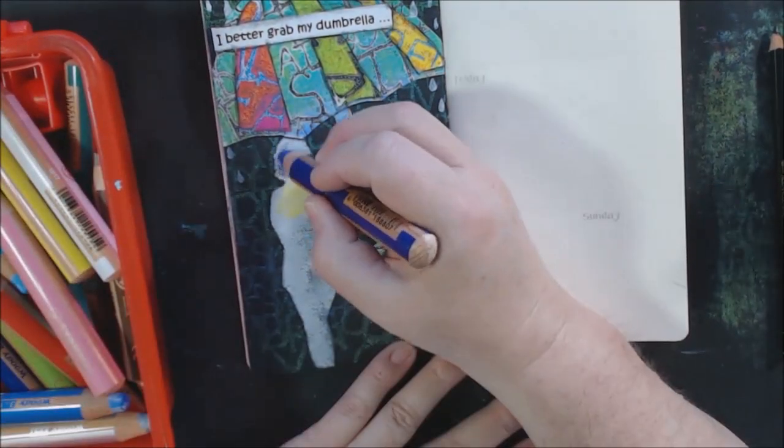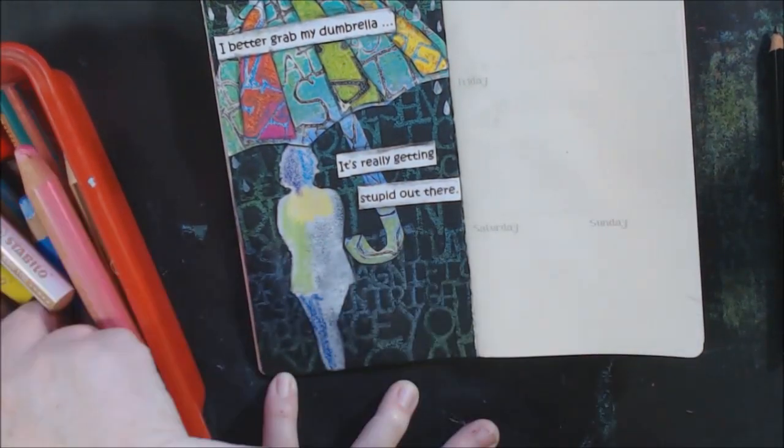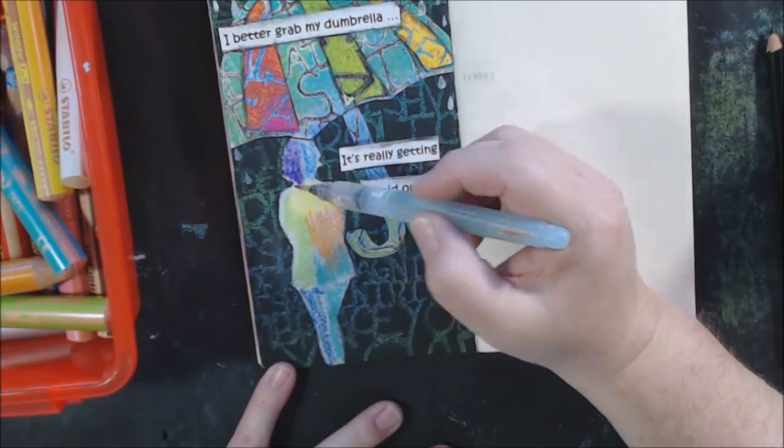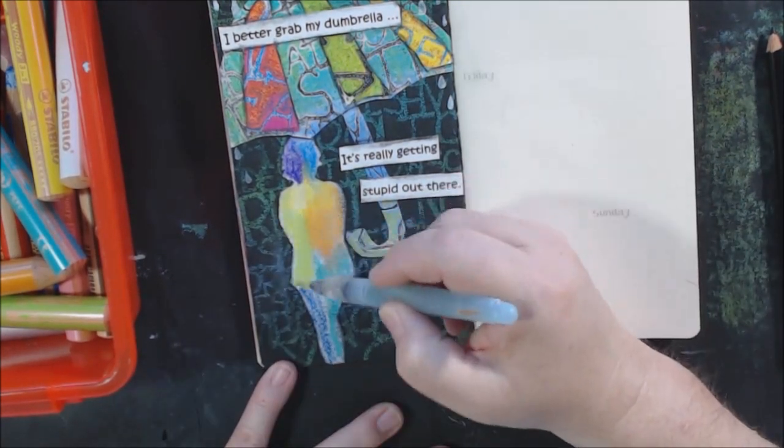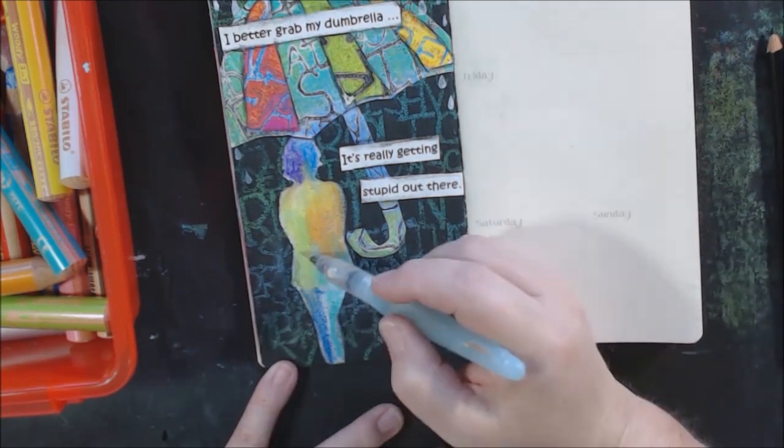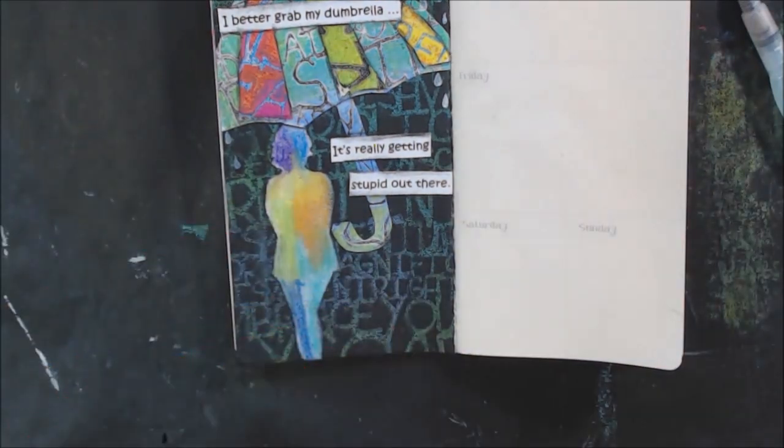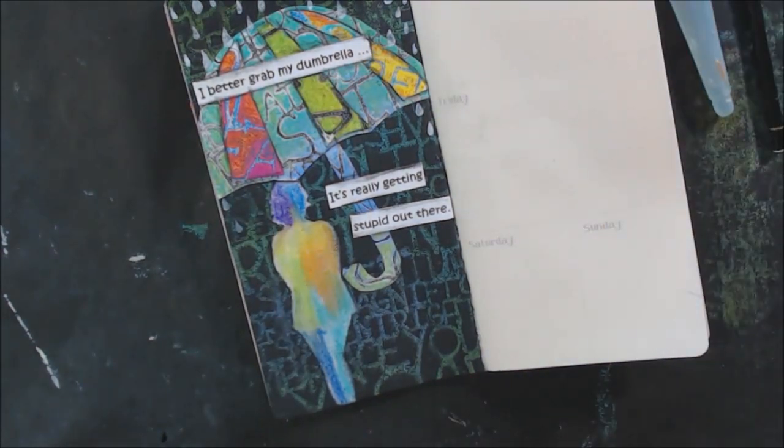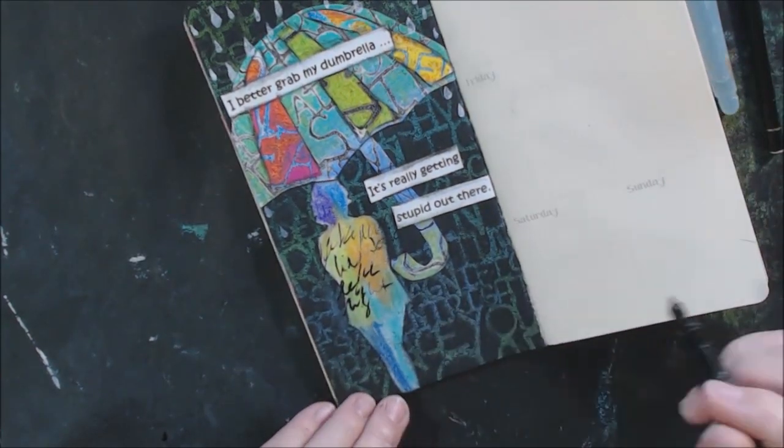So now I want to add some color to my stenciled figure, so I'm using some Stabilo woodies. These are wood crayons from Stabilo that are highly water reactive, just like the Stabilo All pencil that I use so frequently, that I have been using in this journal so frequently. You can blend it with water or you can leave it looking more like a crayon. Either way it's fine. So that's adding some of that rainbow color to the figure as well.